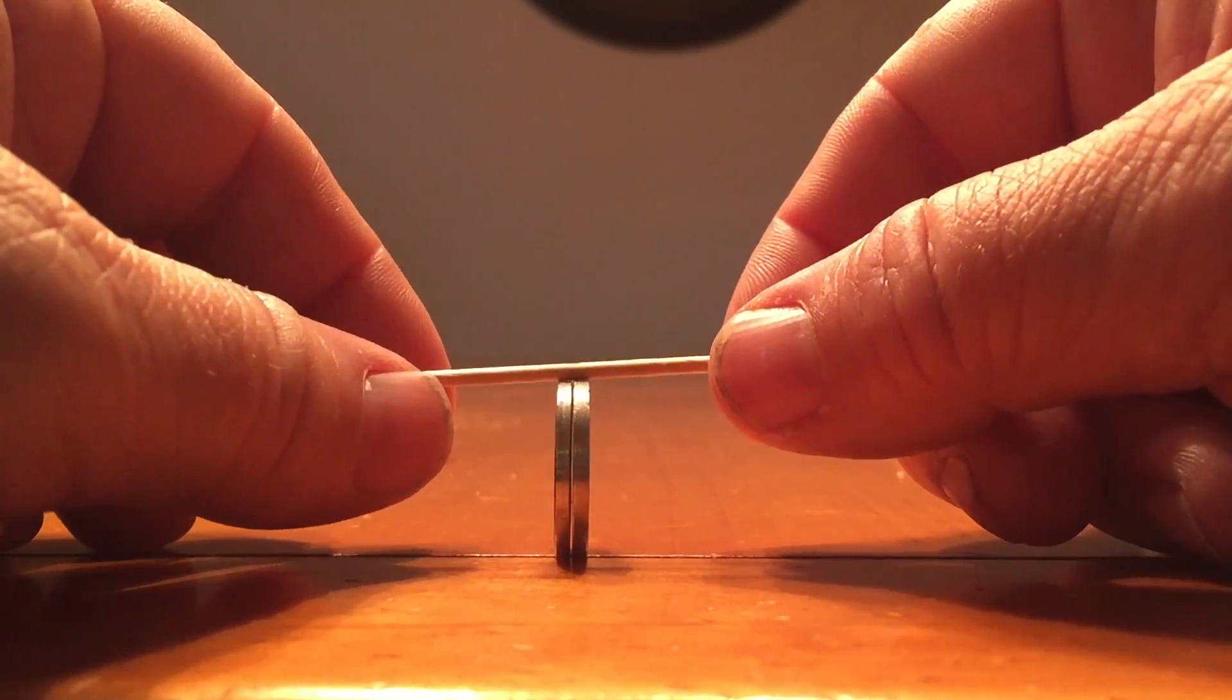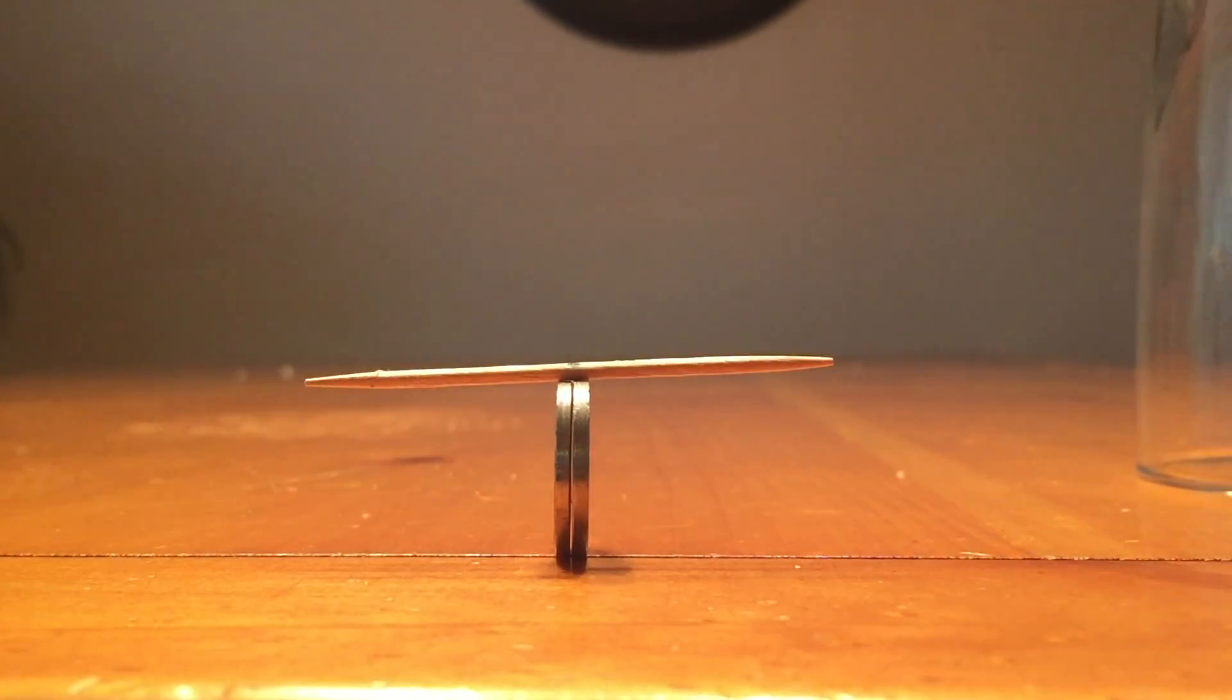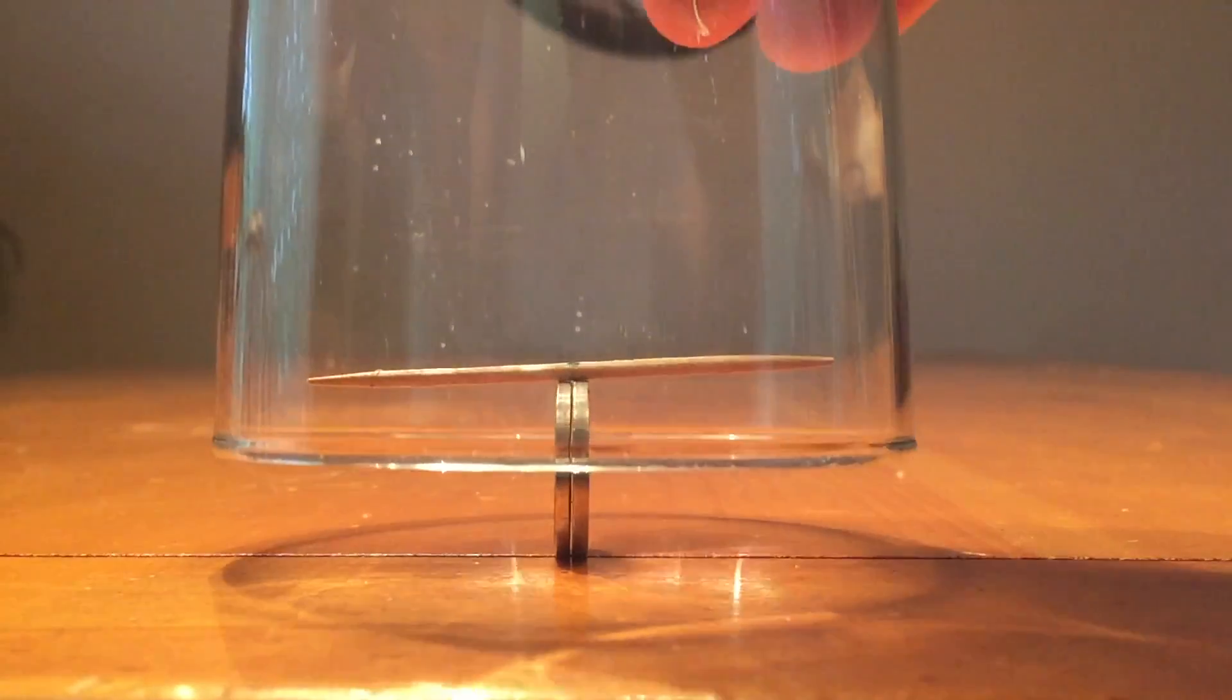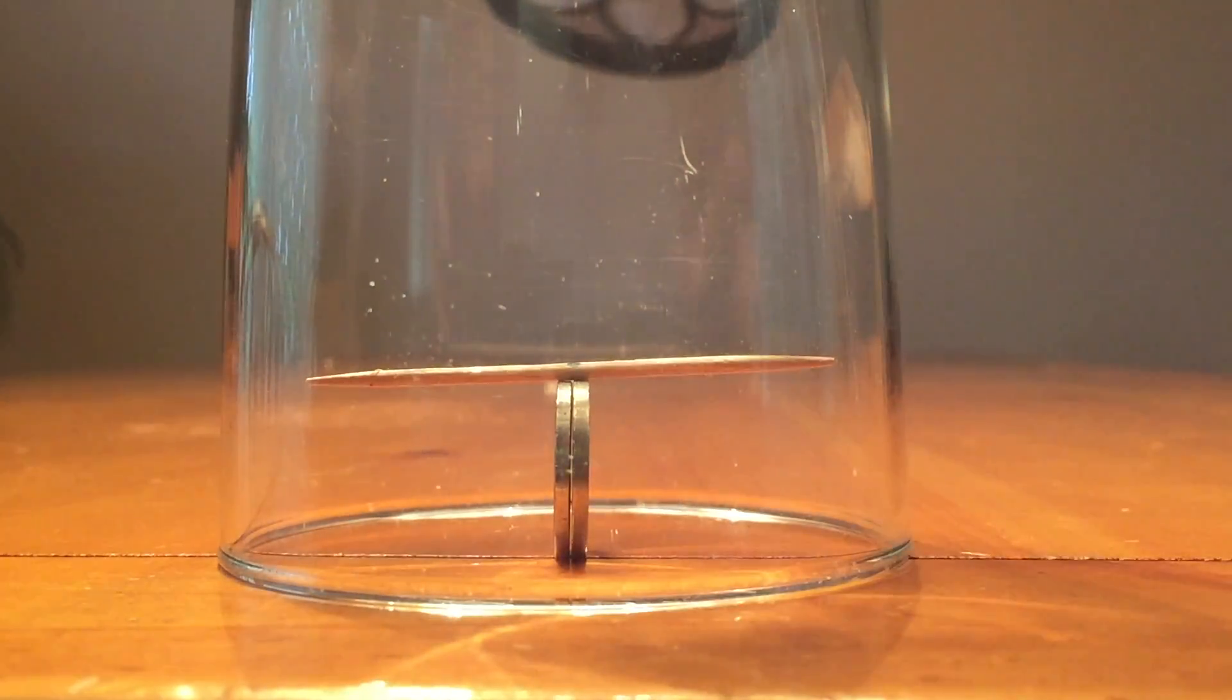To set up the experiment, I used two US nickels—any coins that are thick enough to hold the toothpick. One would be preferable. Then I marked my toothpick in the middle to get the center point so it was easier to balance, and then set the glass over it.